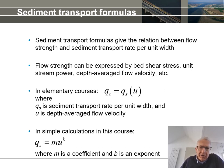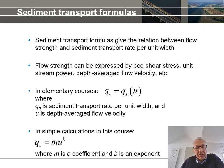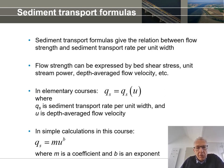In the elementary courses we are dealing with now, we can generally use the functionality of depth-average flow velocity. So the formula reads: qs, the sediment transport rate per unit width, is equal to qs as a function of u, depth-average flow velocity. In simple calculations, this function can be a power law: qs = m · u^b, where m is a coefficient and b is an exponent.